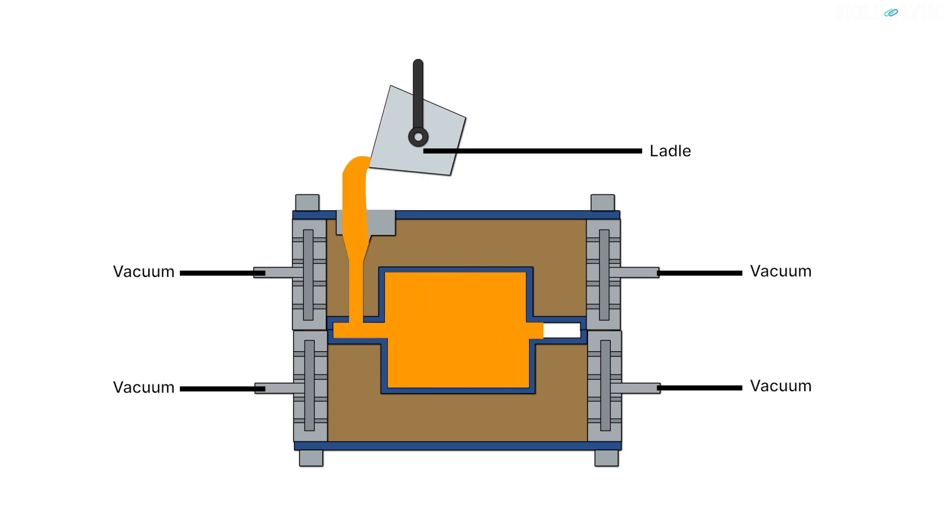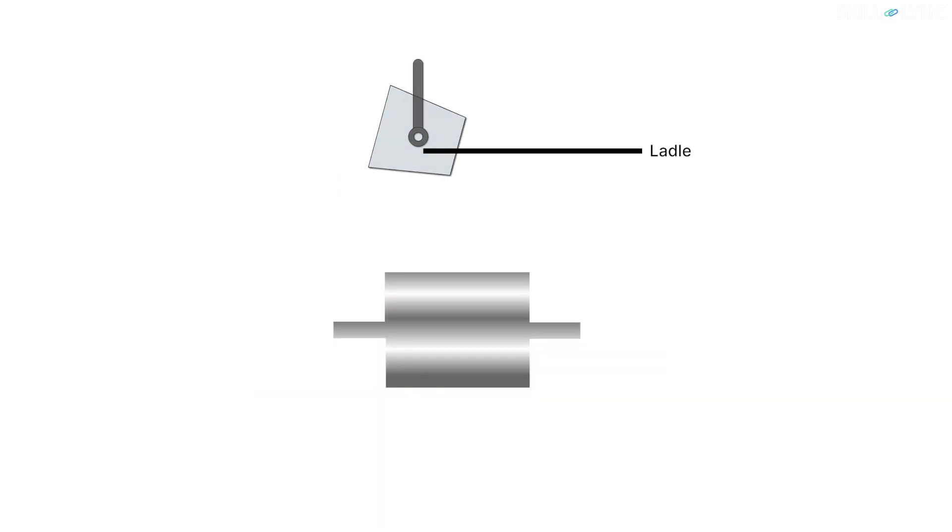However, the casting cavity stays out of the vacuum. Once the metal has solidified, the vacuum is switched off. This causes the molding sand to fall away and hence the final casting is obtained.